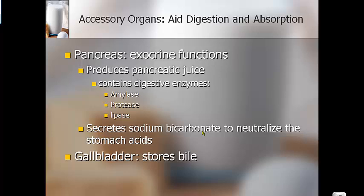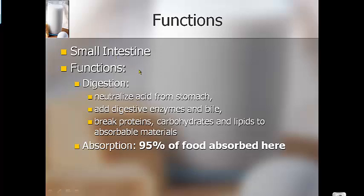Sodium bicarbonate is basically baking soda — so your pancreas does naturally what people do when they drink baking soda in water for an upset stomach. Your gallbladder stores bile. Your small intestine has two parts: the top is called the duodenum, the bottom is called the ileum. The small intestines neutralize acids from your stomach, digest food using bile from the liver and enzymes from the pancreas, and absorb nutrients.